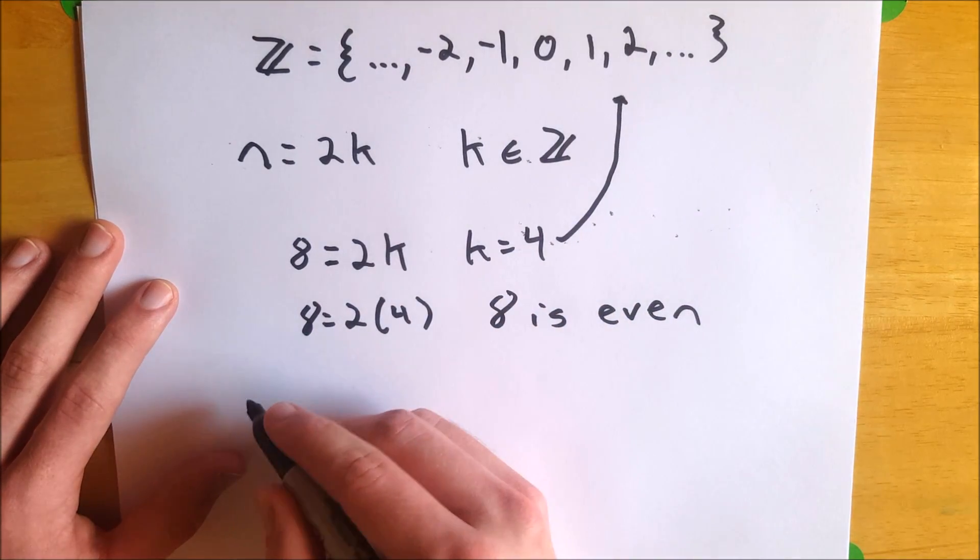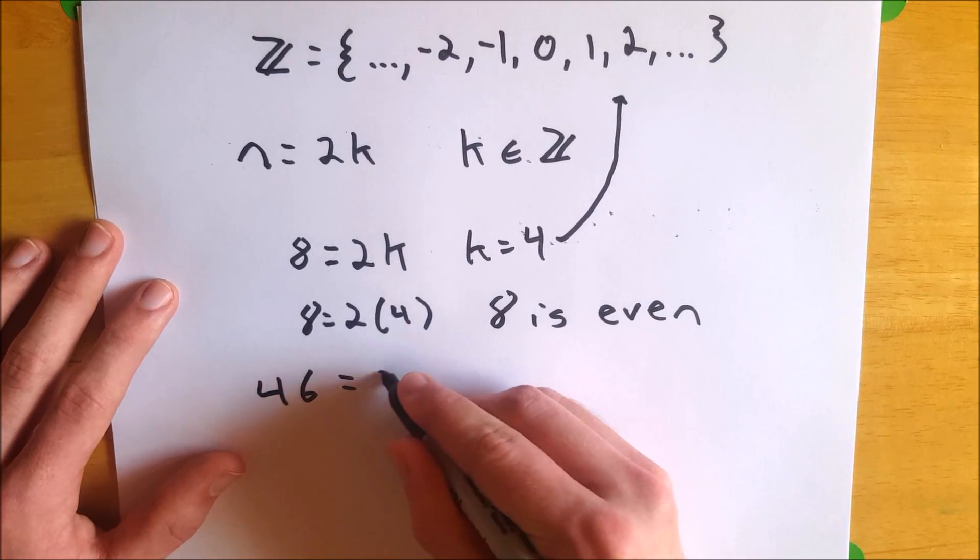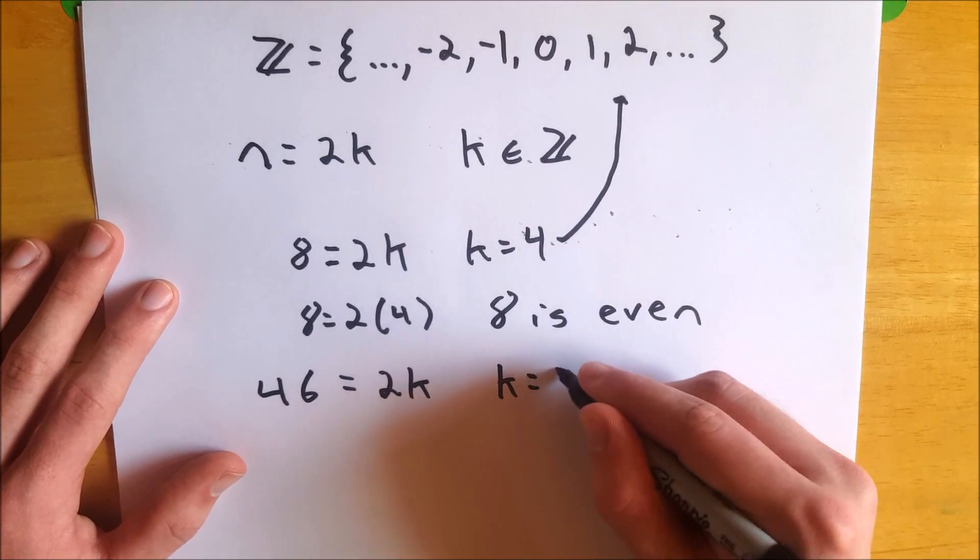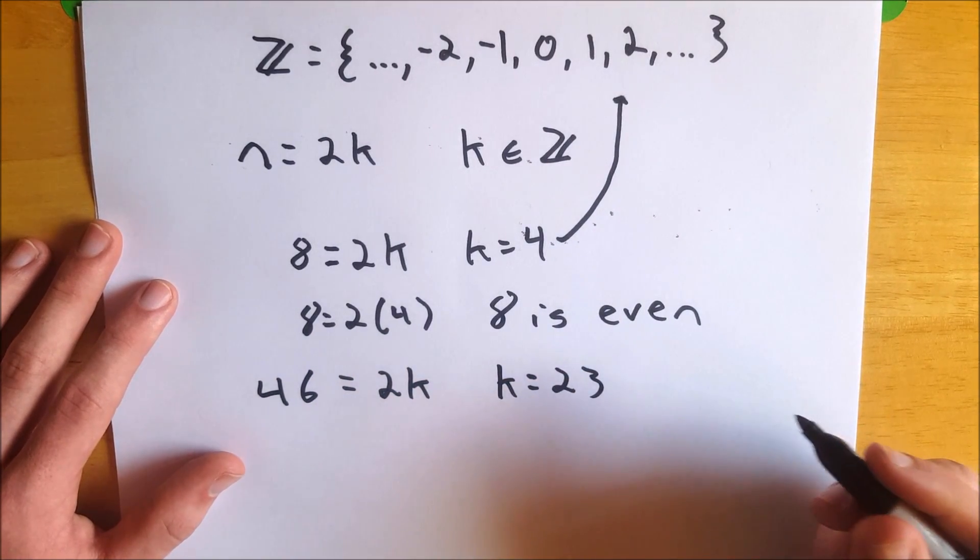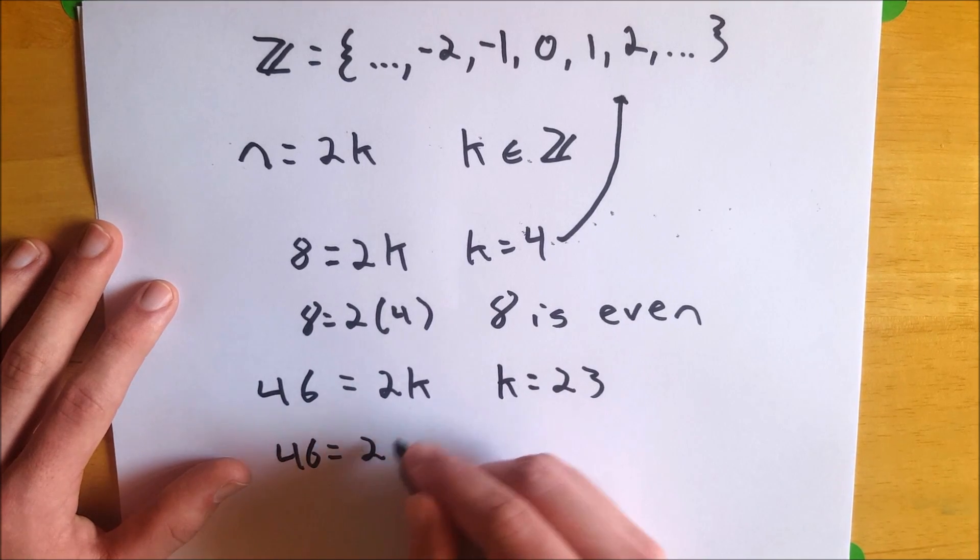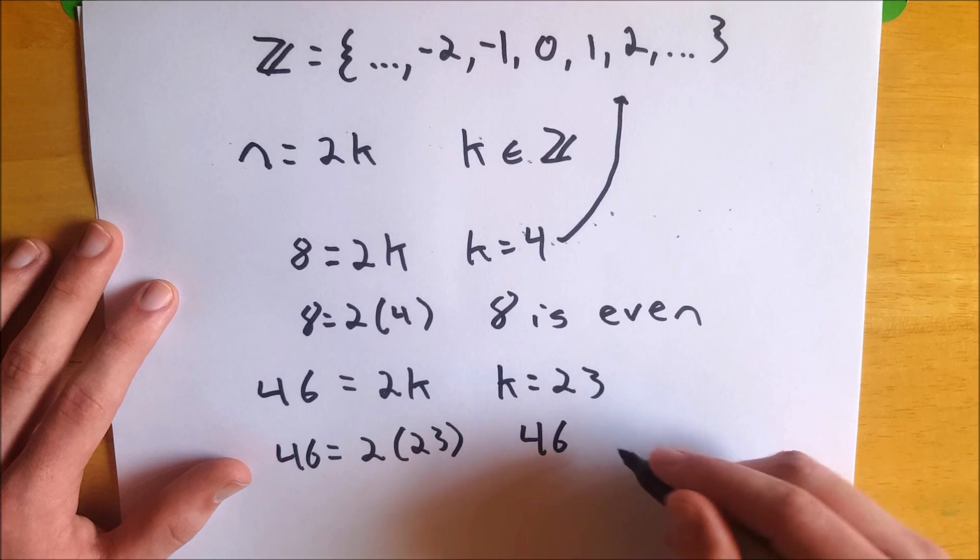Try one more, let's say 46. 46 equals 2k for k equals 23. 23 is an element of the integers, so let me just write this out: 46 equals 2 times 23, so 46 is even.